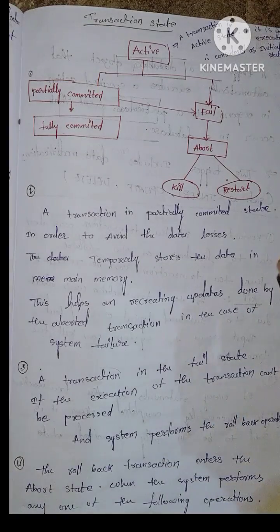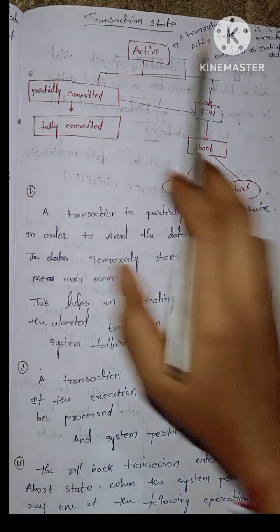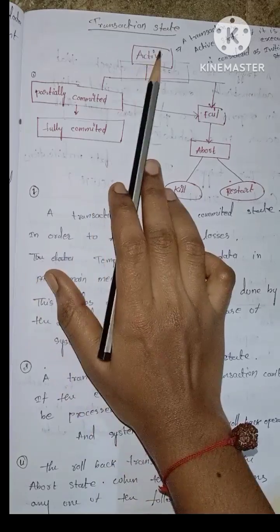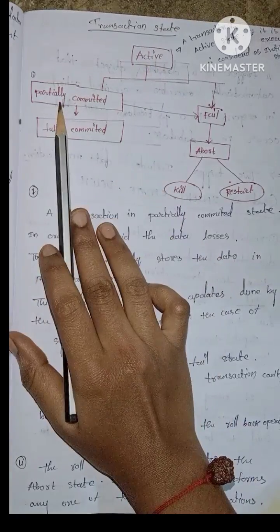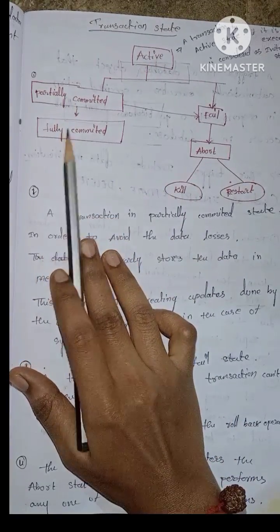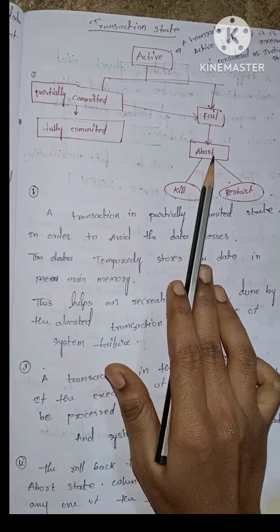The next topic is Transaction State. There are 5 states: Active State, Partially Committed State, Fully Committed State, Fail State, and Abort State.